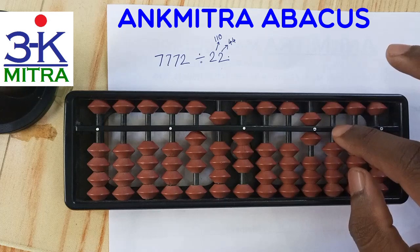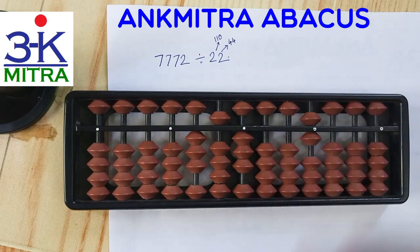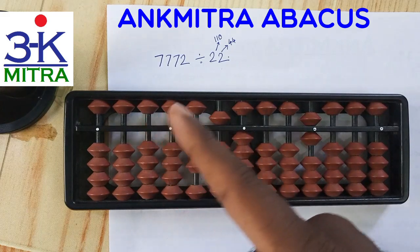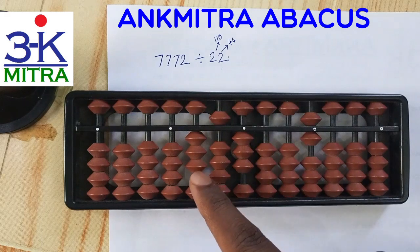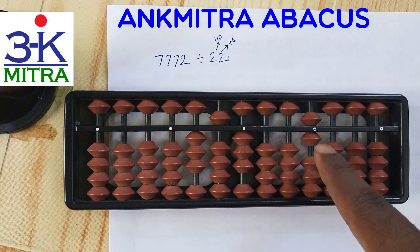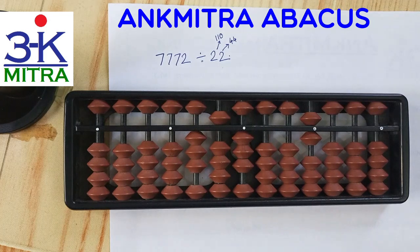The calculation is complete. The answer for 7772 divided by 22 is 353 with a remainder of 6. This is the way it is done when the student is not aware of the table of 22.